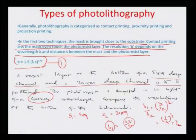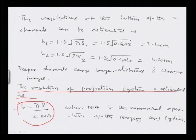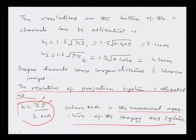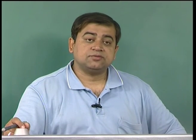For projection lithography, the resolution equation is expressed differently as b = λs / (2 × NA), where lambda is the wavelength, s is the distance of the object from the masking layer, and NA is the numerical aperture of the imaging lens system. In projection lithography, expensive optics is used for guiding the light so that there is no diffraction effect from small windows over long distances. The projection lithography resolution is thus b = λs / (2 NA).